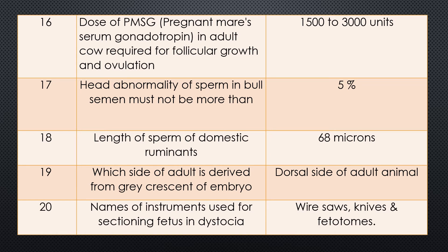Question 18. Length of sperm of domestic ruminants average. Answer: the average length of sperm of domestic ruminants is 68 microns. Question 19. Which side of the adult is derived from the gray crescent of the embryo? Answer: in an adult, the dorsal side is developed from or derived from the gray crescent of the embryo stage.